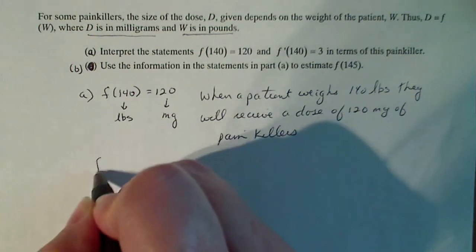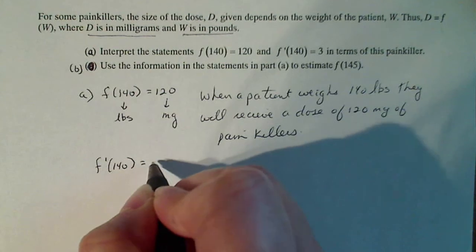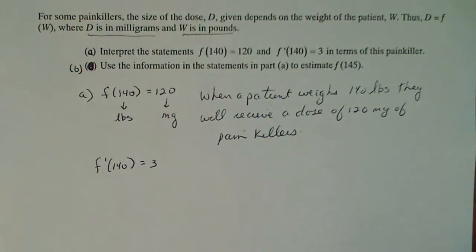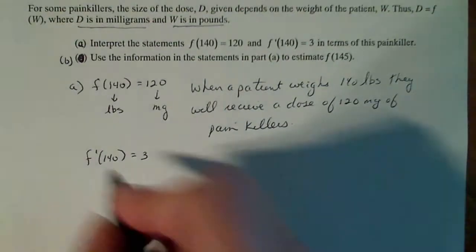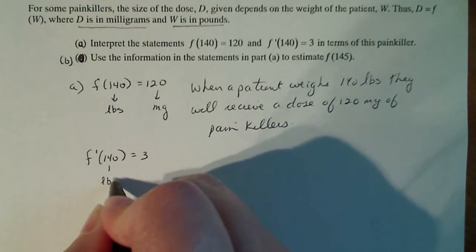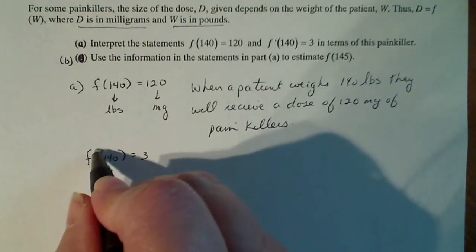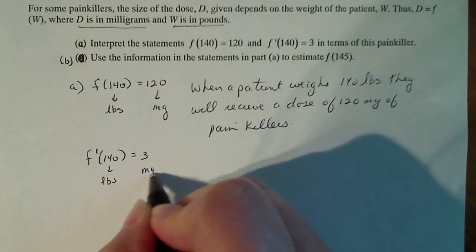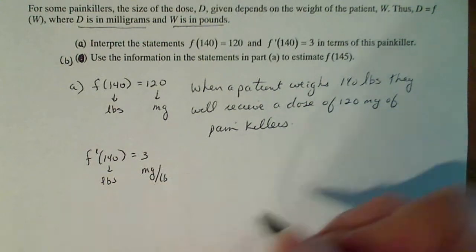Now let's look at F'(140) = 3. Now again, 140 is in pounds, but three is a derivative here, so that's going to be milligram per pound in that unit of measure.